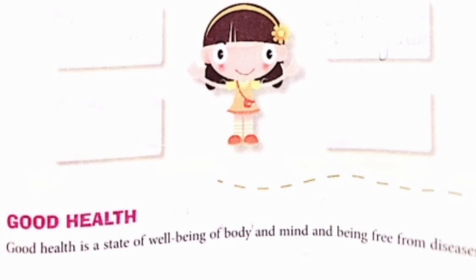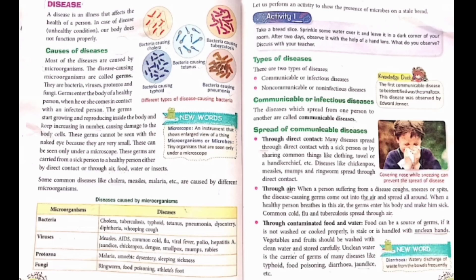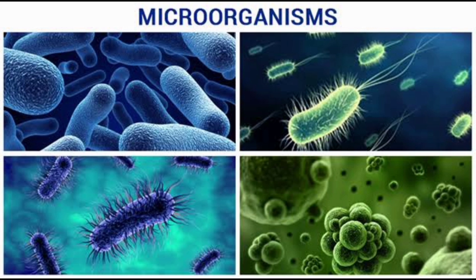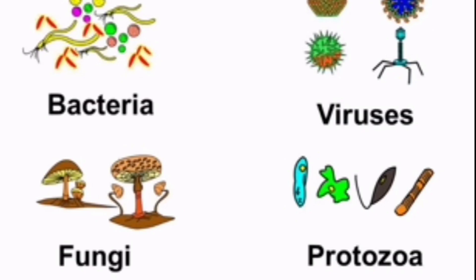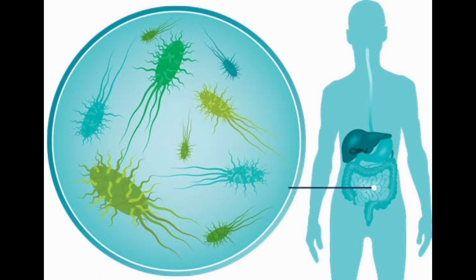Good health is a state of well-being of body and mind and being free from disease. A disease is an illness that affects the health of a person — in case of disease, our body does not function properly. Most diseases are caused by microorganisms. The disease-causing microorganisms are called germs. They are bacteria, viruses, protozoa, and fungi.